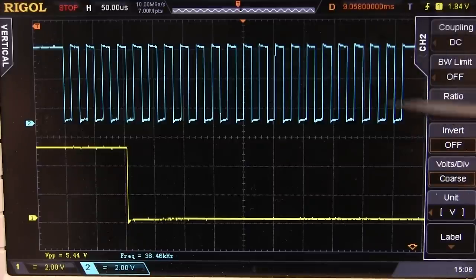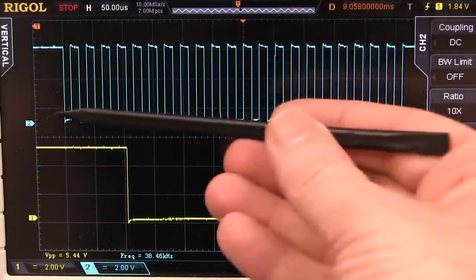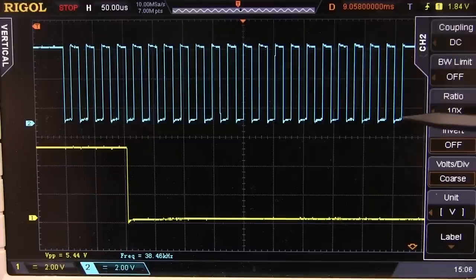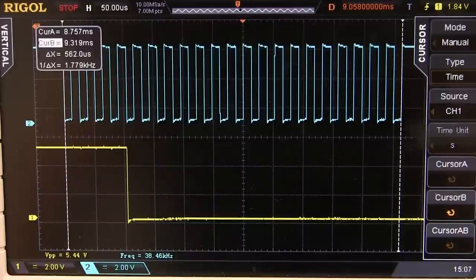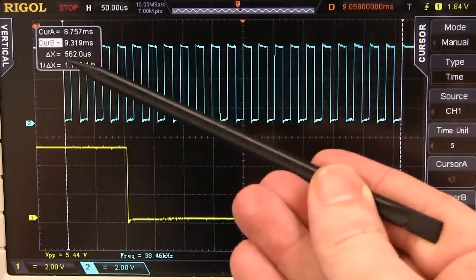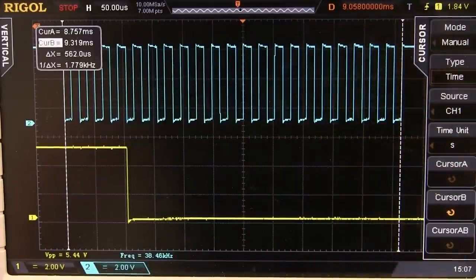And you'll notice the time of our burst there, we're on 50 microseconds per division, is just over 550 microseconds. So we can get that exact value. It doesn't have to be absolutely spot-on, but it should be close. So we'll measure that as accurately as we can. And I've used both my cursors there, and I'm measuring 562 microseconds for that burst.